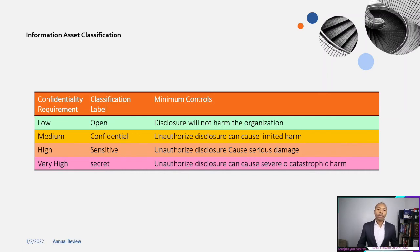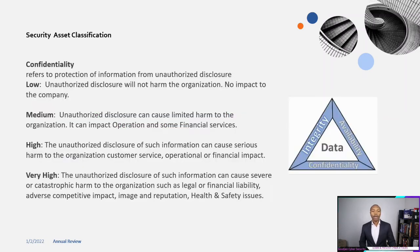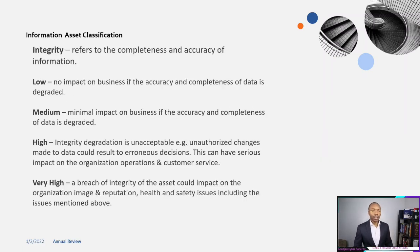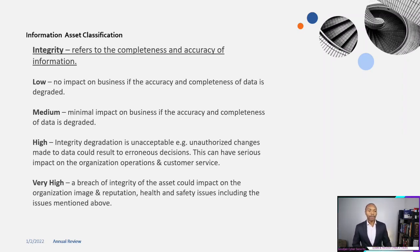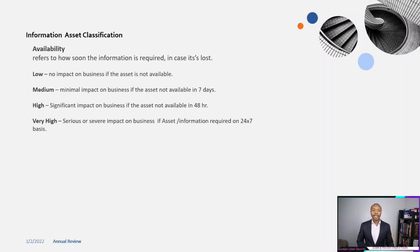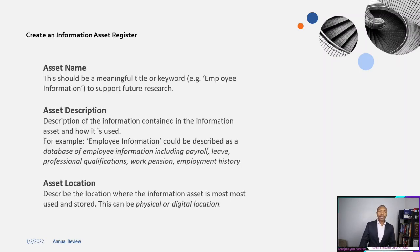Based on the classification level selected, we use Open, Confidential, Sensitive, and Secret, because this information is very important — you label them based on sensitivity. You also have Confidentiality, which can be Low, Medium, High, or Very High. Integrity refers to the completeness and accuracy of information. Availability refers to how soon the information is required in case it is lost. The next step is to create your information asset registry.